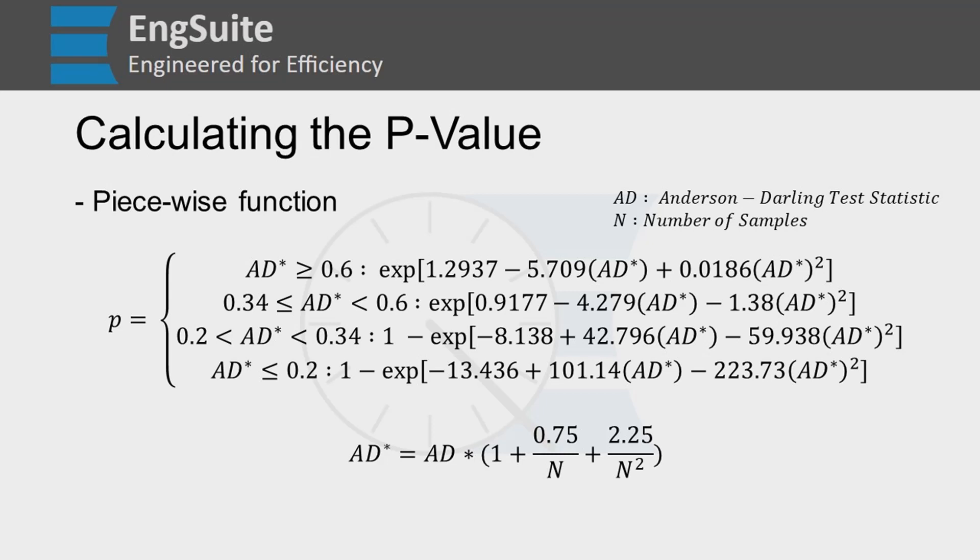If we have a value of AD star that is greater than 0.2 but less than 0.34, we use this equation. Now, I'm not going to read these all out because it's just a lot of constants and exponents. So again, AD star less than or equal to 0.2, we use the last function.